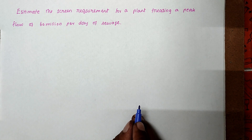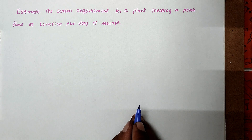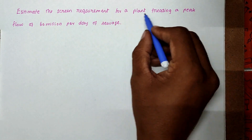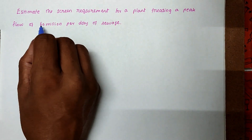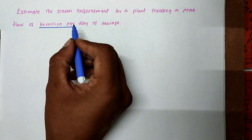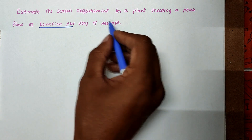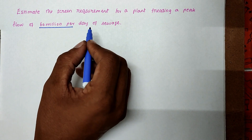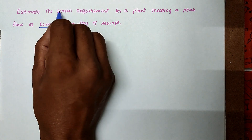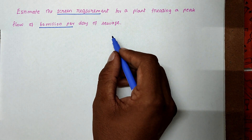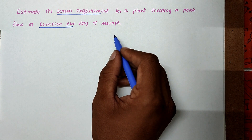Hello friends, welcome to civil engineering exam. Today we are going to see the problem related with design of wastewater engineering in the topic of screens. The problem is: estimate the screen requirement for the plant treating a peak flow of 60 million liters per day of sewage. We have to find out the screen dimensions and the head loss of a screen.